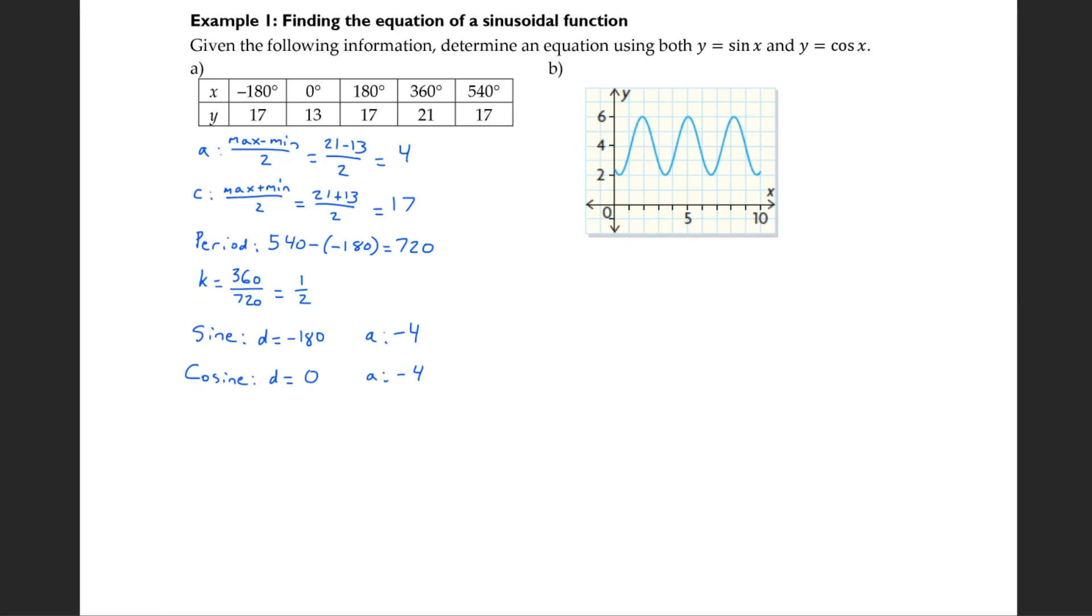As well, if you wanted to, you could sub in one of these points and then isolate for d. So you could use the equation y equals a sine bracket k bracket x minus d plus c. We have a, k, and c, you have them listed above, a being 4 at this point still because you haven't changed anything. And then you'd use a point x, y and solve for d. And you could do the same with cosine.